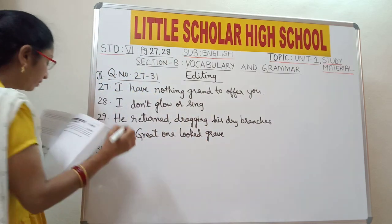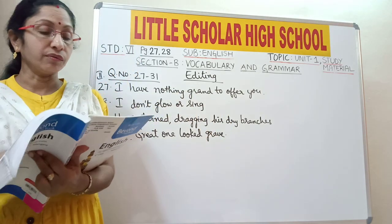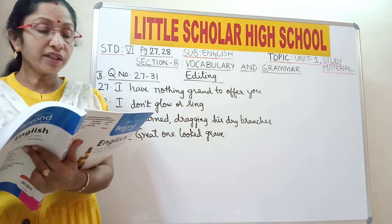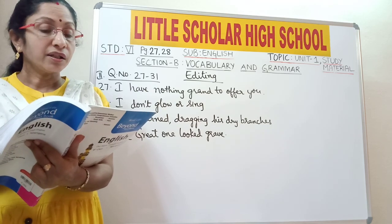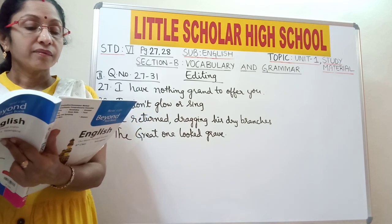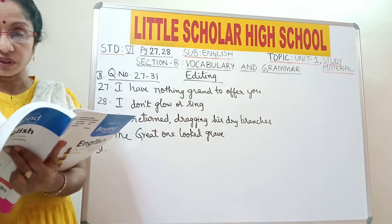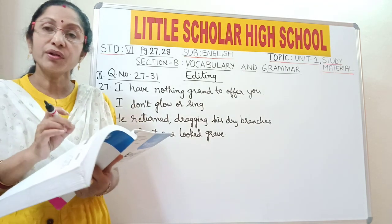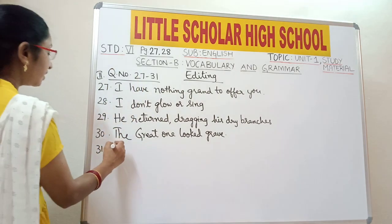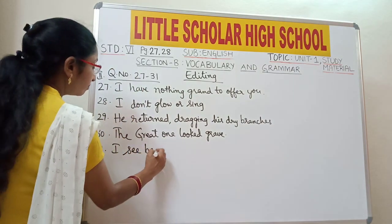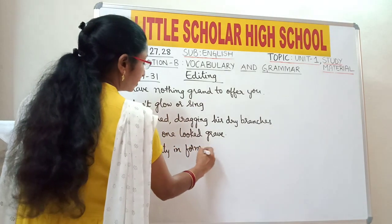Question number 31: 'I see beauty in form or sound.' When you are talking about two similar positive qualities — form and sound — we use the conjunction 'and'. Whenever you talk about two positive qualities, use 'and'. Whenever you talk about two opposite qualities, use 'or'. So 'or' should be replaced with 'and'. Write: 'I see beauty in form and sound.'